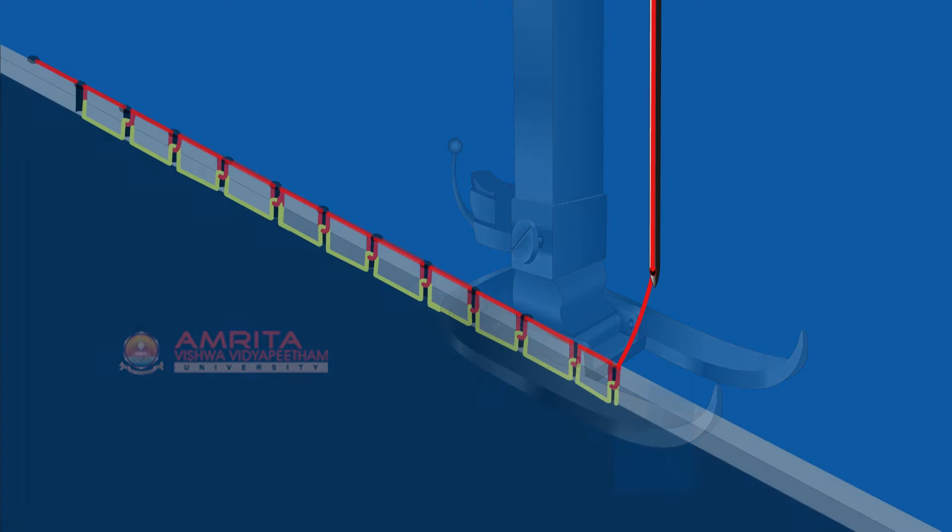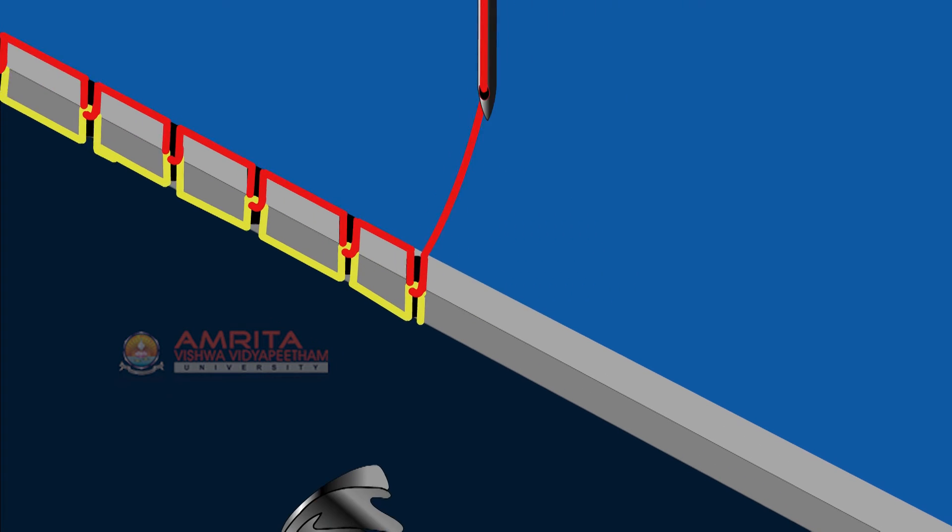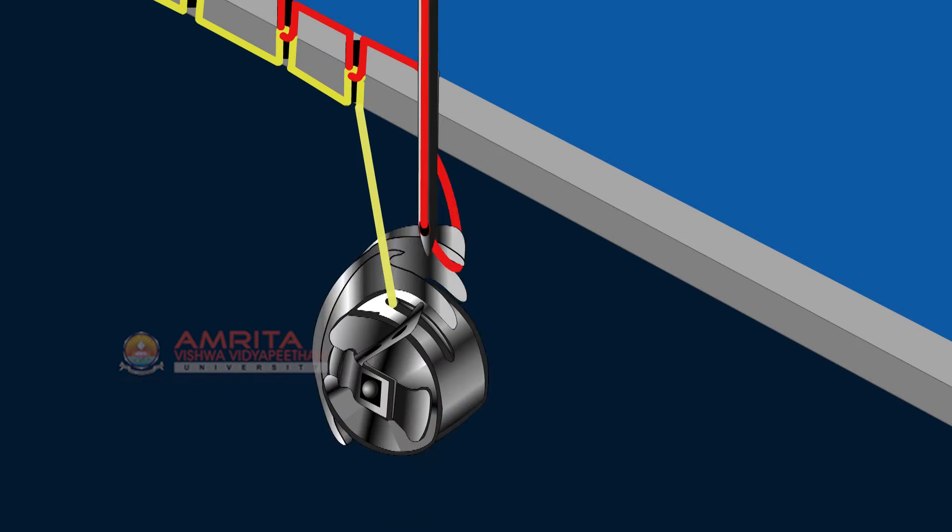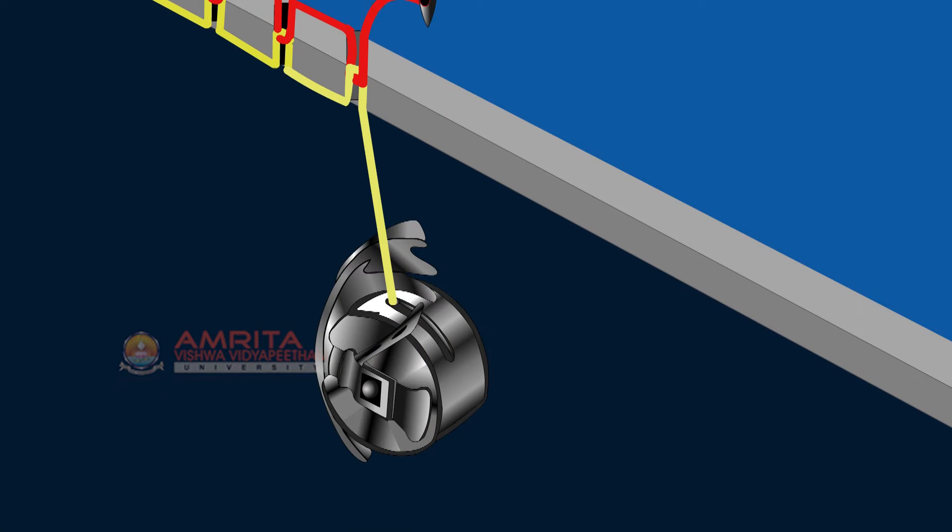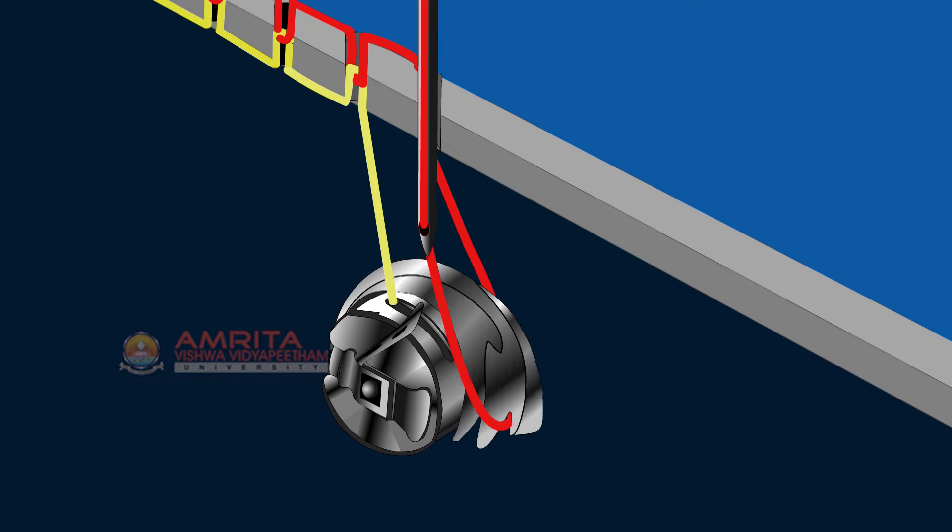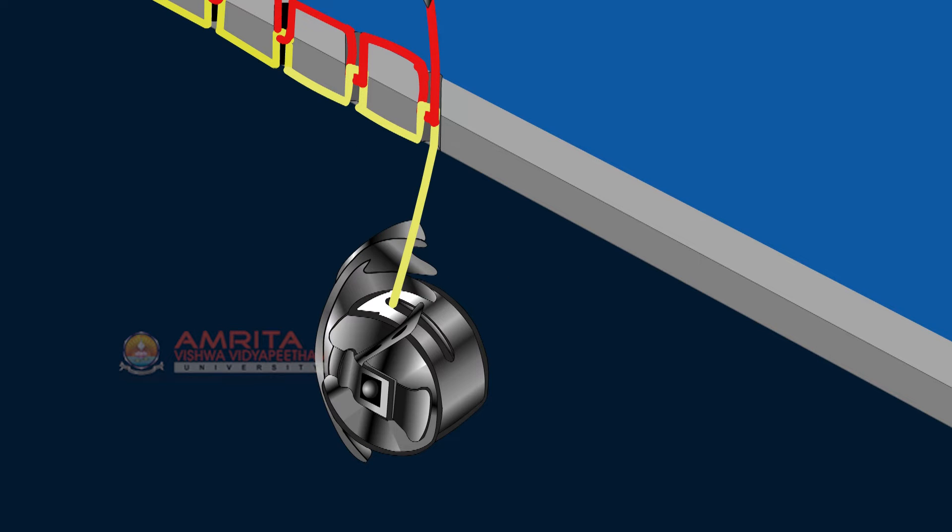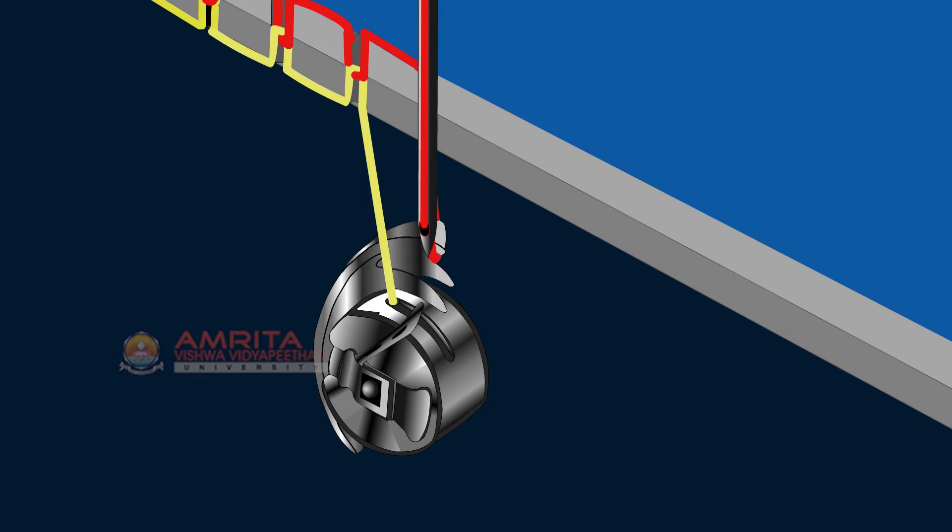A rotating shuttle hook enlarges the needle thread loop, catches the thread of the needle, and brings it around the bottom thread spool. The two threads knot and form a stitch to hold the fabrics together.